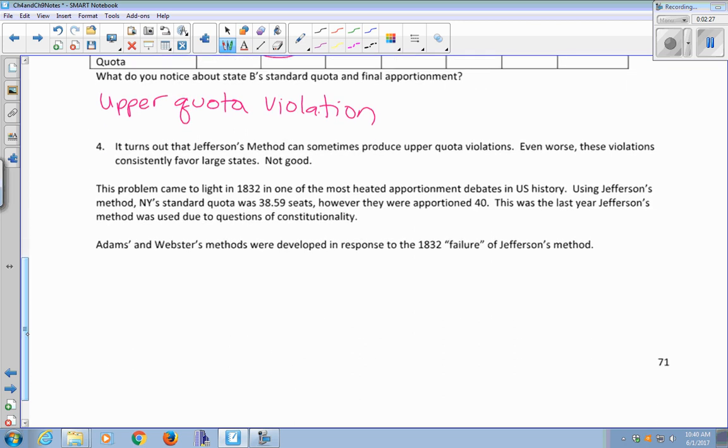And it turns out that Jefferson's method can sometimes produce upper quota violations. And even worse, those violations consistently favor large states. That is a big drawback. And the problem came to light in 1832 in one of the most heated apportionment debates of U.S. history. Using Jefferson's method, New York's standard quota was 38.59 seats. However, they were given 40 seats. And that was the last year that Jefferson's method was used due to questions of constitutionality. Adams' and Webster's method were both developed in response to this 1832 failure of Jefferson's method.